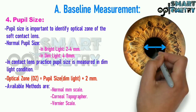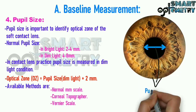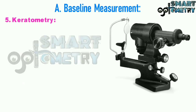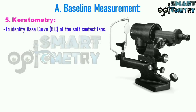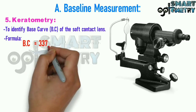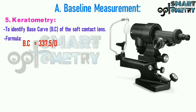5) Keratometry: To identify the base curve of the soft contact lens, the formula used is: base curve equals 337.5 divided by D, where D is the dioptric value of the average K reading.